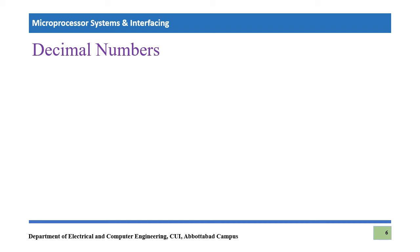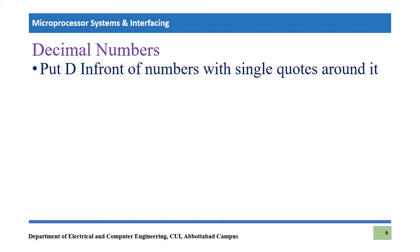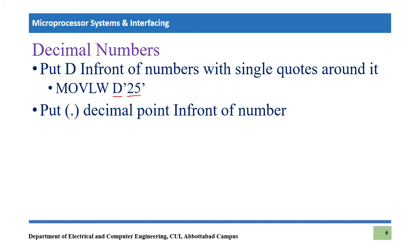The third number system available in PIC 18F is decimal. We have two approaches: the first is putting d in front of the number with single quotes, for example 'movlw d'25'' where d indicates this is a decimal number. The second approach, which is unique to this number system, is putting a decimal point in front of the number — for example 'movlw .25' — where the dot indicates the decimal number system, so 25 is treated as 25 in decimal.